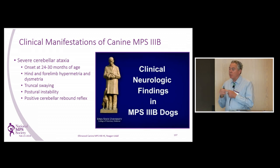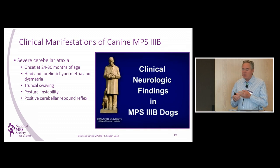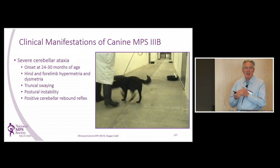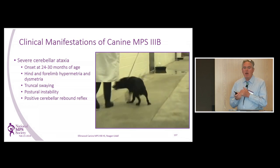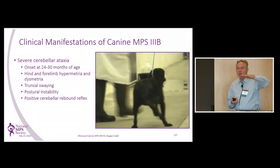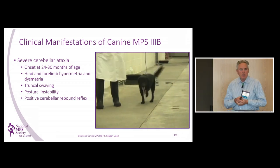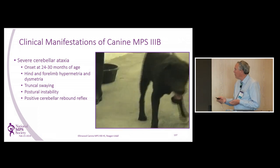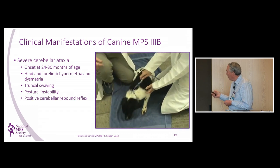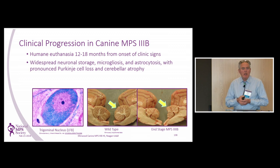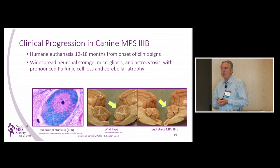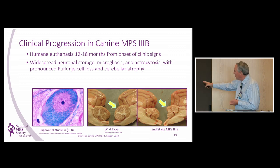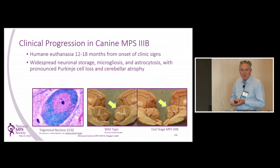The clinical signs in the MPS3B canine model begin at 24 months of age: wide-stepping gait, hypermetria, truncal swaying, postural instability — they literally cannot stand and shake their heads at the same time. They also have an interesting reflex where held vertically they cannot right themselves and continue to fall at end stage. When we look at end stage, we see pronounced storage in neurons, pronounced microgliosis and astrocytosis. The cerebellum is remarkably atrophied — those folds become so atrophied that cerebrospinal fluid can be imaged within them.